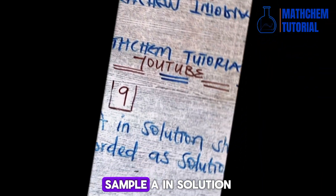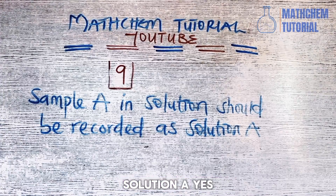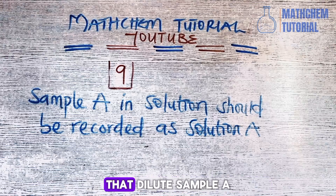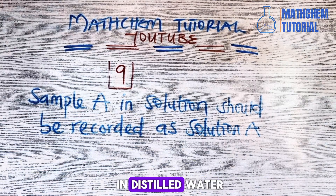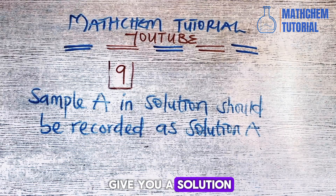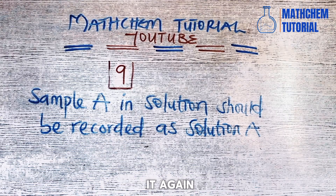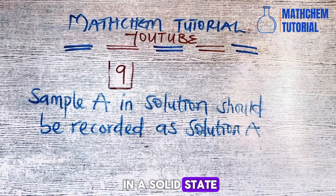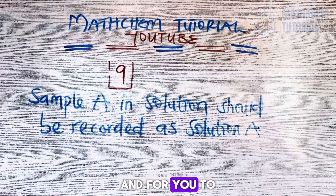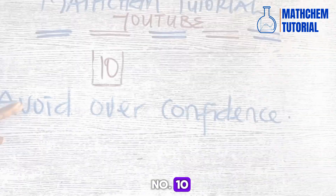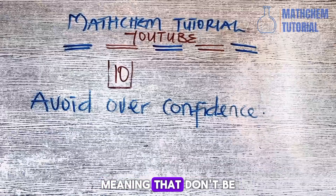Number nine: sample A in solution should be recorded as solution A. Many students make the mistake of continuing to call it 'sample A' even after dissolving it. When you are told to dissolve sample A in distilled water, it becomes solution A. Sample A is a solid, while solution A is a liquid. Once you have dissolved it in water, it forms a solution and should no longer be called sample A.